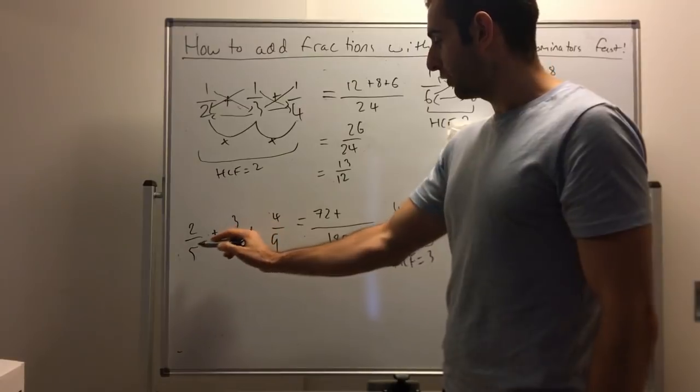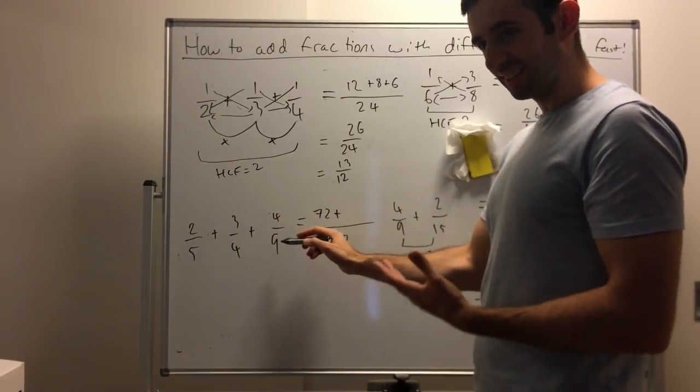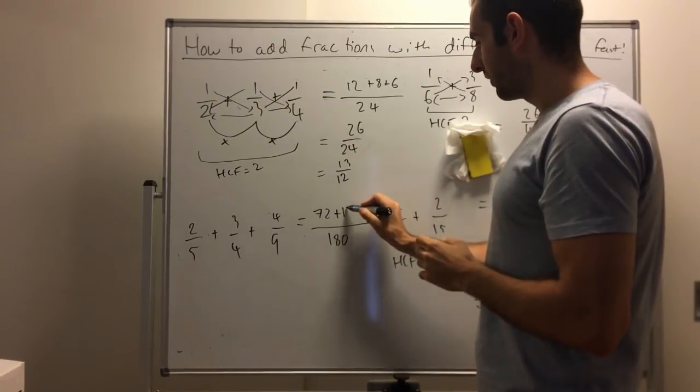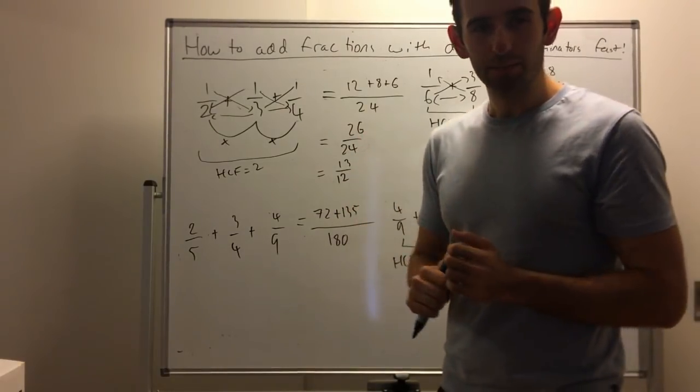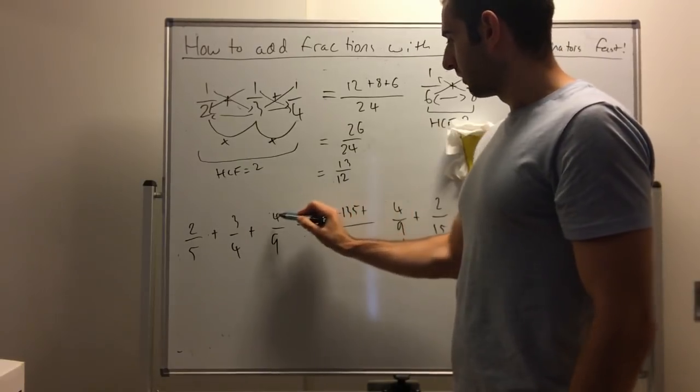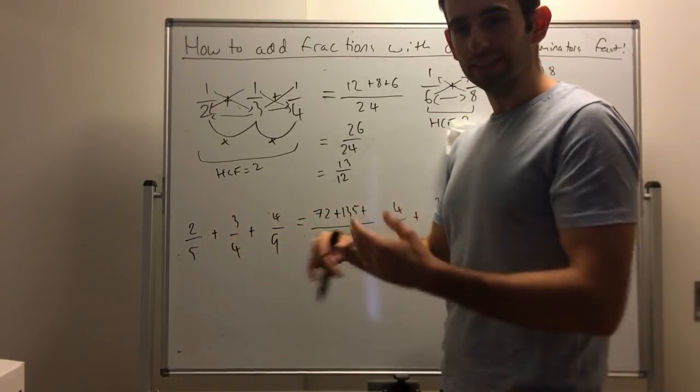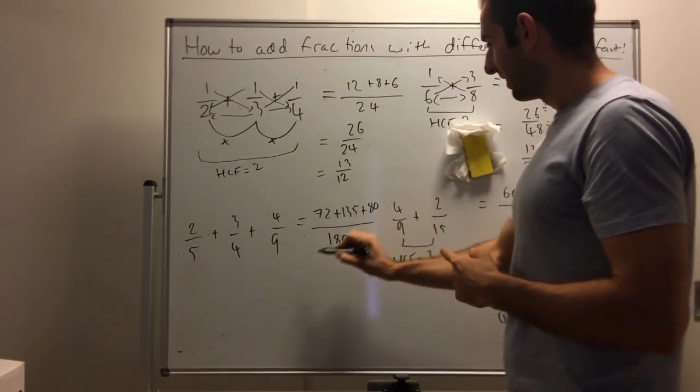Then 3 times 5, 15 times 9. This is where it gets a little tricky. 15 times 9, 135. I'll have future videos on how to deal with timesing numbers a lot quicker. Then plus 4 times 4 is 16, times 5. 16 times 5, that's 80.